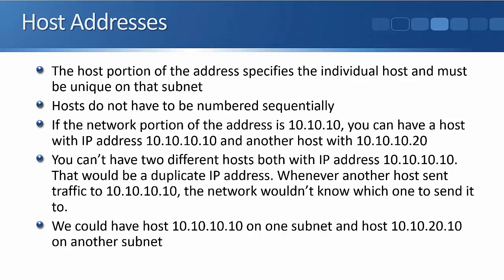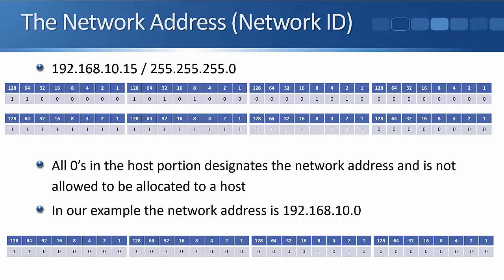You could have host 10.10.10.10 on one subnet and 10.10.20.10 on a different subnet — since they're different subnets, that's not a duplicate. All zeros in the host portion designates the network address and cannot be allocated to a host. In our example, the network address would be 192.168.10.0 — we take the network portion 192.168.10 and fill the host portion with all zeros. This is the bottom address in that particular subnet.